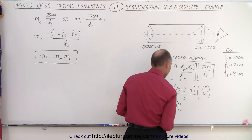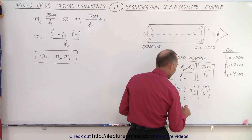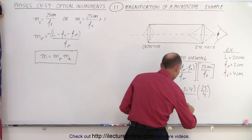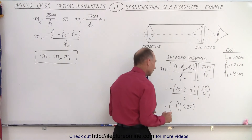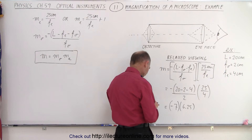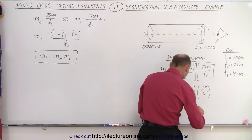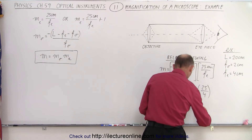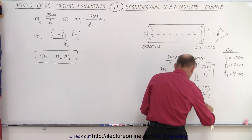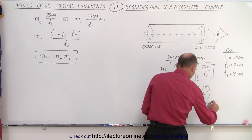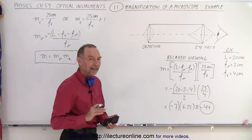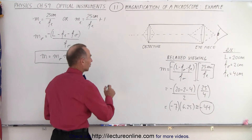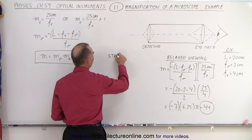25 divided by 4 is 6.25, and 7 times 6.25 gives us approximately minus 44. So that's the magnification of the microscope using relaxed viewing. How about using strained viewing?